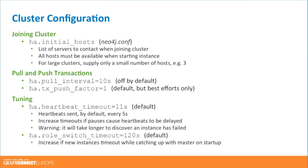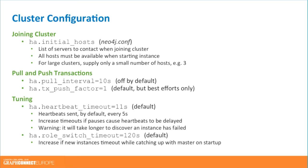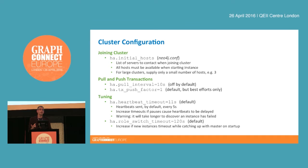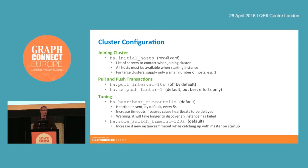Some configuration options to consider when configuring the cluster. Probably the most important parameter is HA initial hosts. The value is a list of addresses of other instances in the cluster. When we introduce a new instance into the cluster, we need to provide it with the address of at least one existing machine it can contact to discover everything else in the cluster. We could provide a single address or a comma-separated list of addresses of other machines. When the new instance joins, it will contact each of those initial hosts to discover the entire topology of the cluster.